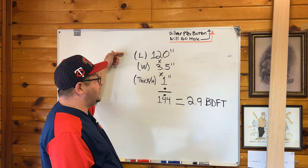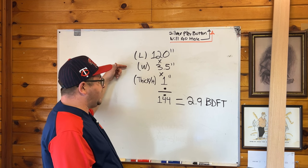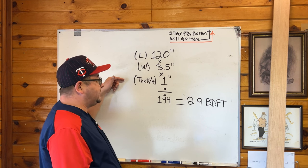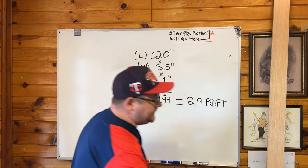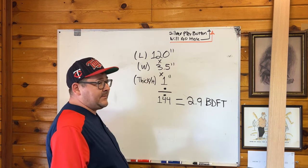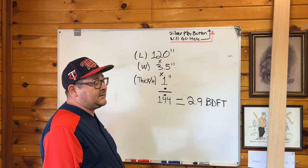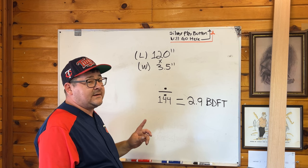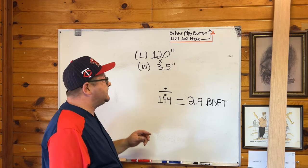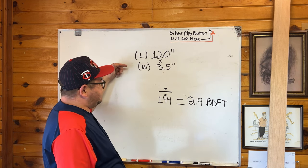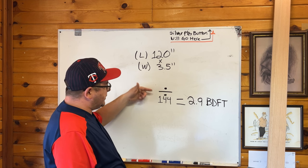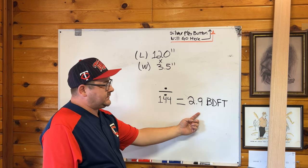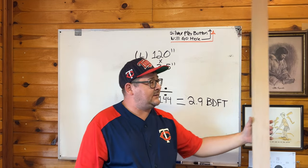Our length is 120 inches multiplied by our width of 3.5 inches multiplied by our thickness or height of 1 inch. We can actually skip the thickness step because multiplying anything by one gives you the same number — it's only when you start getting thicker that it gets confusing. 120 inches times 3.5 inches divided by 144 gives you 2.9 board feet in this piece of lumber.